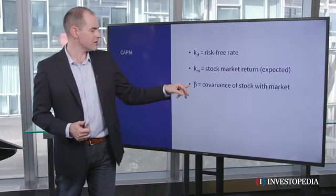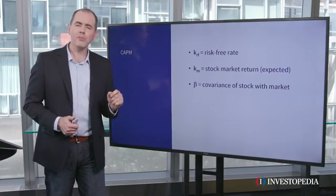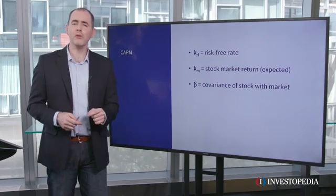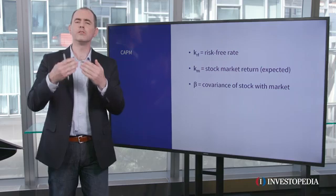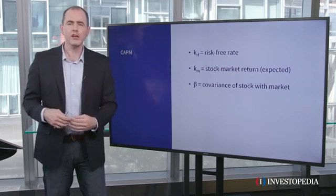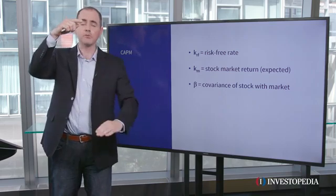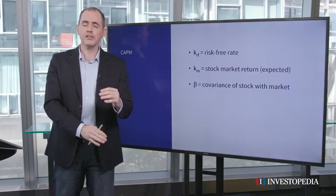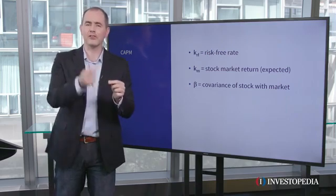Beta — a scary-looking word and a scary-looking symbol, but it's not so scary. All beta is: the market has a beta of 1 by definition, and all beta measures is how much the stock zigs when the market zags. We typically look at historical numbers to see this. So if the market was up 10% and the stock was up 20%, market was down 5% and stock was down 10%, that stock would have a beta of 2, meaning it's essentially twice as variable as the market.